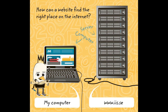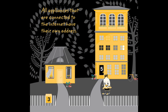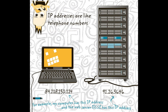How can a website find the right place on the internet and arrive on my computer? That's because all appliances that are connected to the internet — like computers, mobiles, and servers — have their own address. It's like the house you live in; it also has its own address so that you can receive mail and people can visit you. You can also say that internet addresses are like telephone numbers. The right number in the right order makes computers and mobiles able to find each other on the internet. It's like calling a telephone number and having someone answer. IP addresses are like telephone numbers.